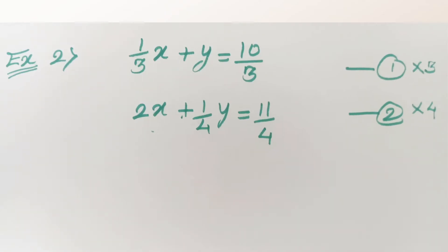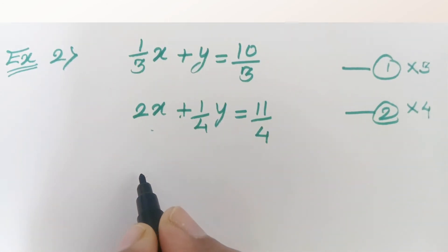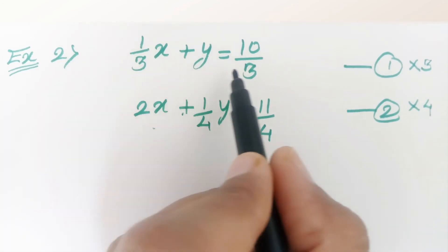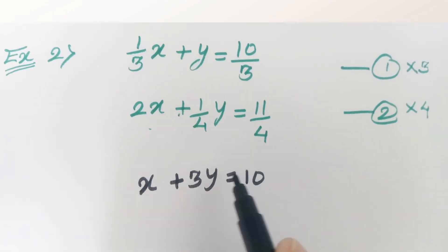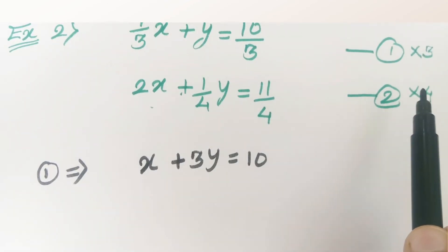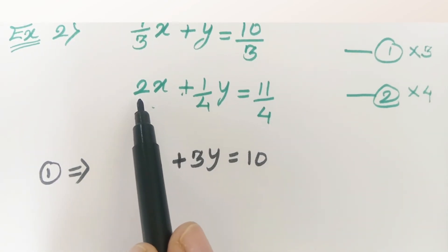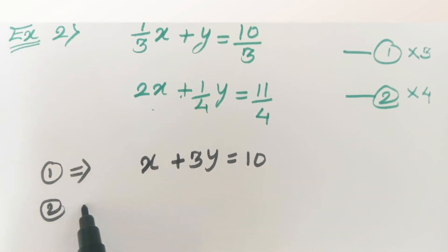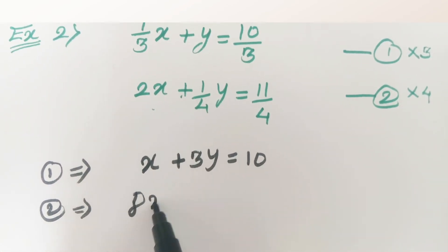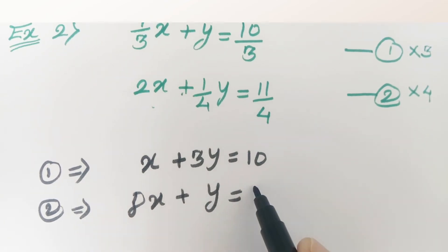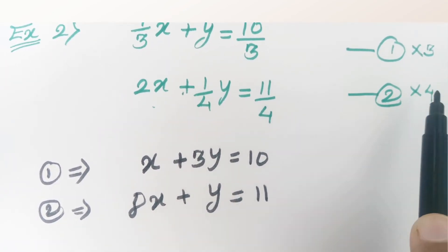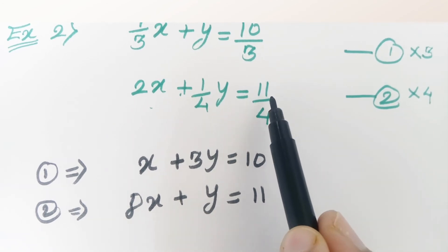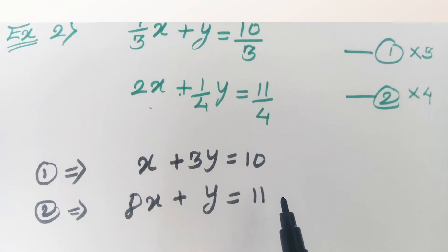After multiplying equation 1 by 3 throughout, we get the new equation: x plus 3y equals 10. This is equation a. Similarly, multiplying equation 2 by 4 throughout, we get: 8x plus y equals 11, because 4 divided by 4 cancels leaving just y, and 4 multiplied by 11 over 4 gives 11. This is equation b.